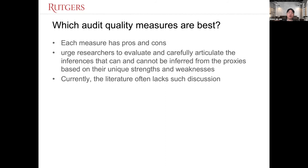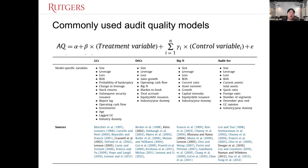I urge you to read the paper and get the detail. I just want to give you the big picture here. The authors urge researchers to carefully articulate the pros and cons of each proxy. As researchers, we should use the proxy that is most appropriate for our research question. In 2014, the literature was lacking in these discussions. This is a typical audit quality model: we have the dependent variable audit quality — we can use a bunch of proxies that we saw before.